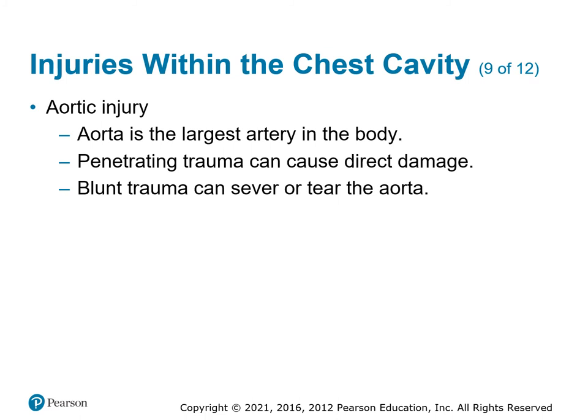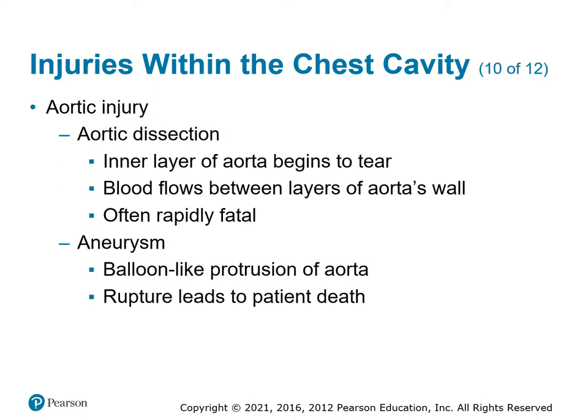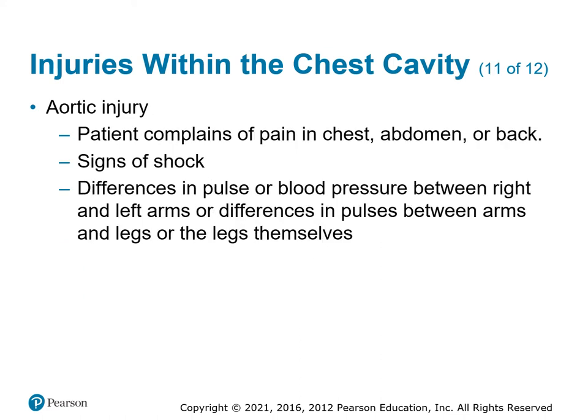Aortic injury occurs from rapid deceleration causing tearing, or from penetrating trauma that hits the aorta. Survival odds are poor because of the high volume of blood flowing through these arteries, but the best you can do is get them to a trauma center. Aortic dissection tears away; an aneurysm bleeds out. Signs include chest pain, abdominal pain, back pain, and differing pulse and blood pressures between right and left arms or legs due to disrupted blood flow from the aorta — possibly going to one side, or to upper extremities but not lower.